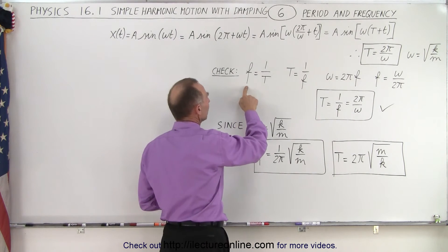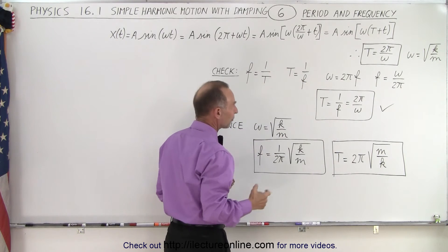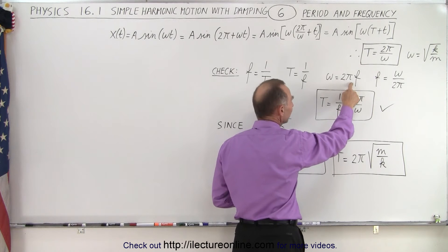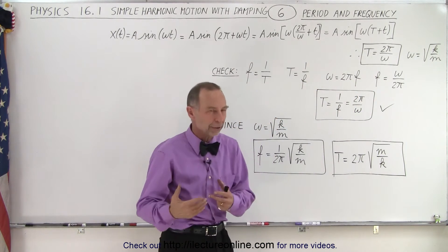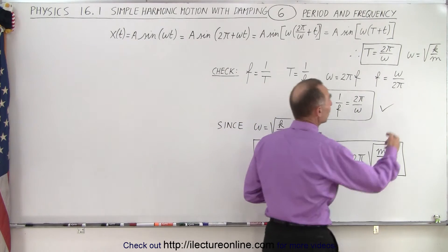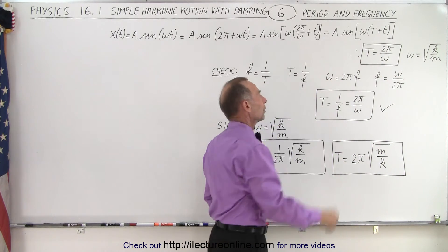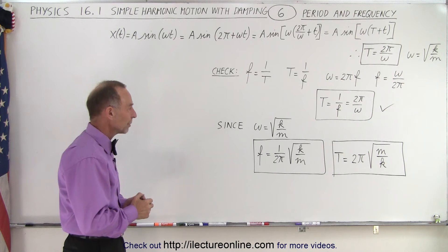Notice that the frequency is equal to the inverse of the period, or the period is equal to the inverse of the frequency, and since omega is equal to 2 pi f, we can say f equals omega divided by 2 pi, and since the period is the inverse of that, then the period should be 2 pi over omega, which is exactly what we got when we went through that analysis. So we can see now that that's indeed a true statement.